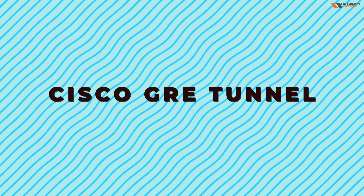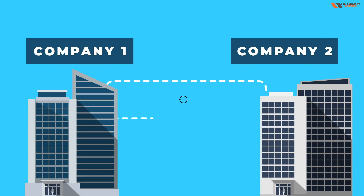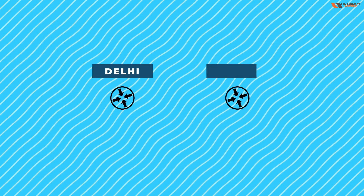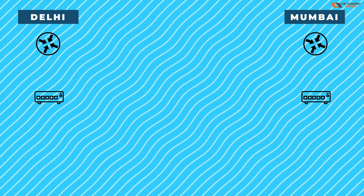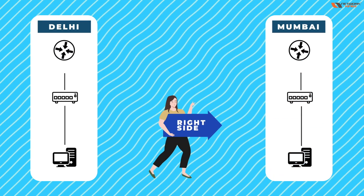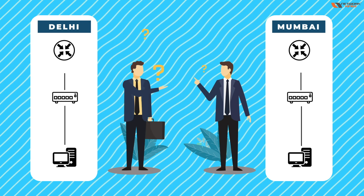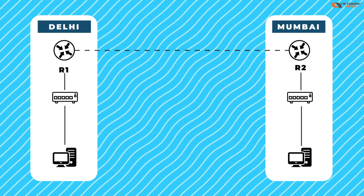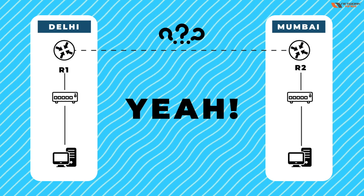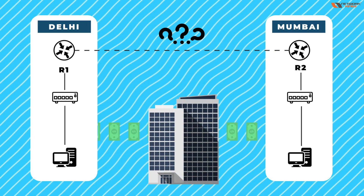The topic is Cisco GRE tunnel. We have two routers representing two locations — Delhi and Mumbai. This is the LAN network of Delhi, and on the right side we have the LAN network of Mumbai. The question is how to connect them. Even today, R1 to R2, if these are two branches, someone has to connect them — but do you think every company can afford those types of private links?